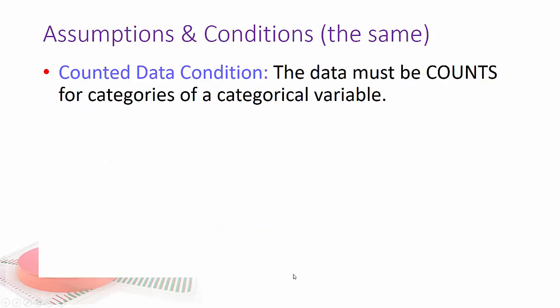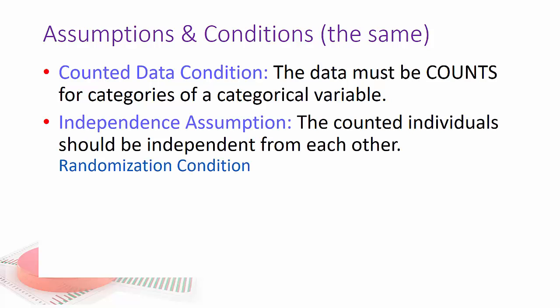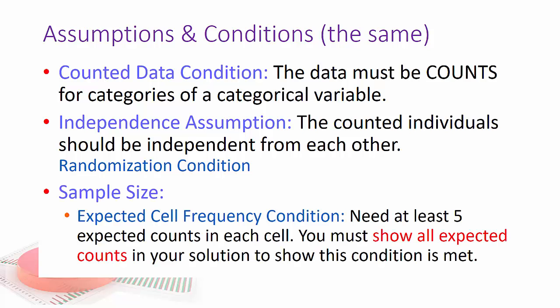Assumptions and conditions are the same as before. The data must be counts for the observed and it has to be categories, and the independence assumption still stands. The counted individuals should be independent from each other. We still have the expected cell frequency condition that means all cells must be greater than or equal to five, and you have to show this in your solution to show the condition is met.